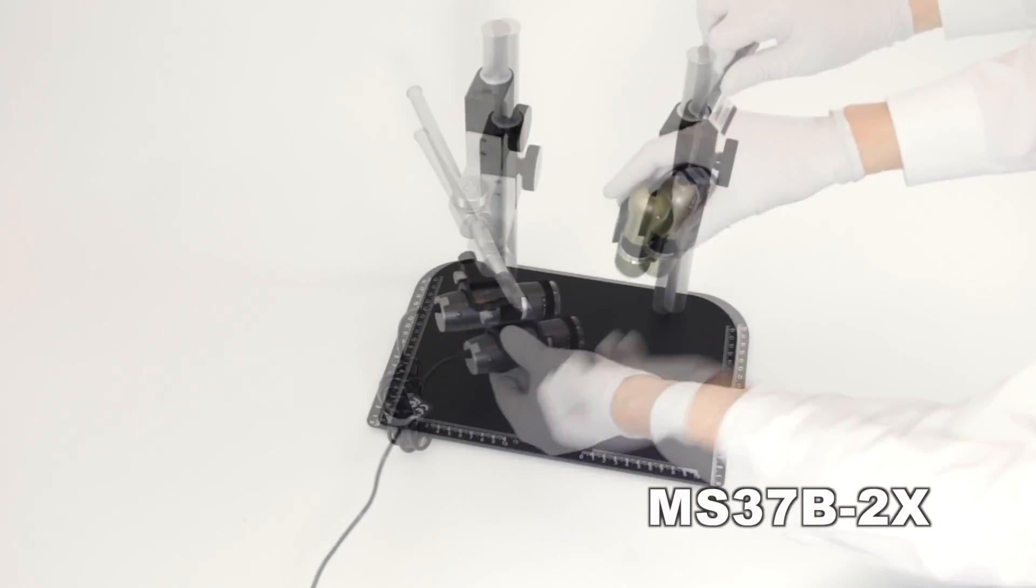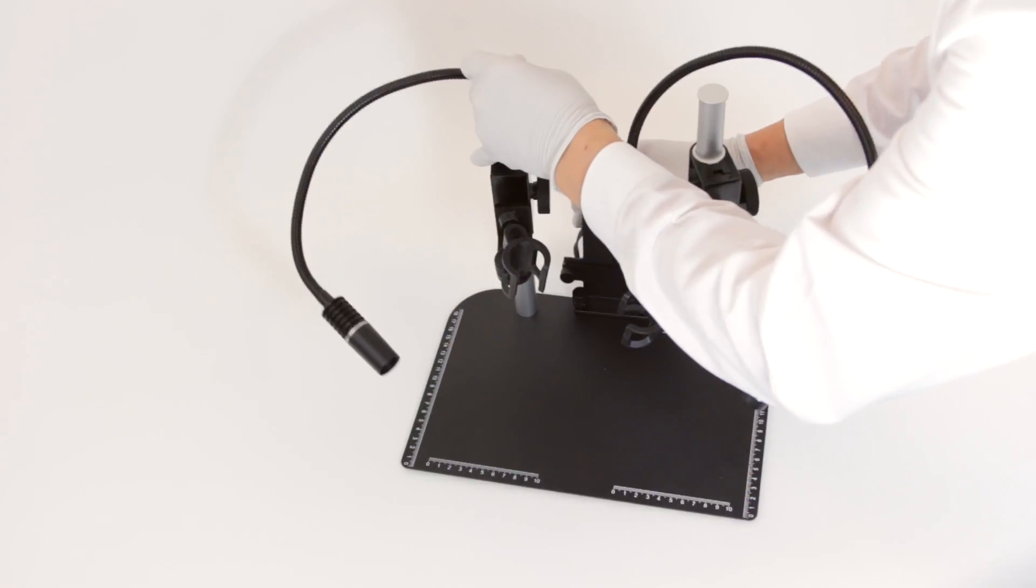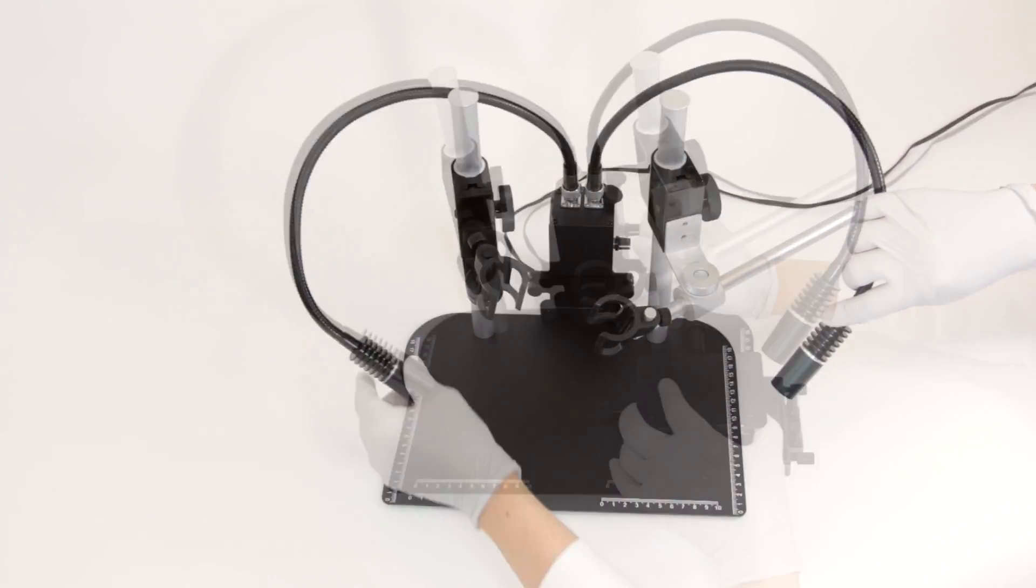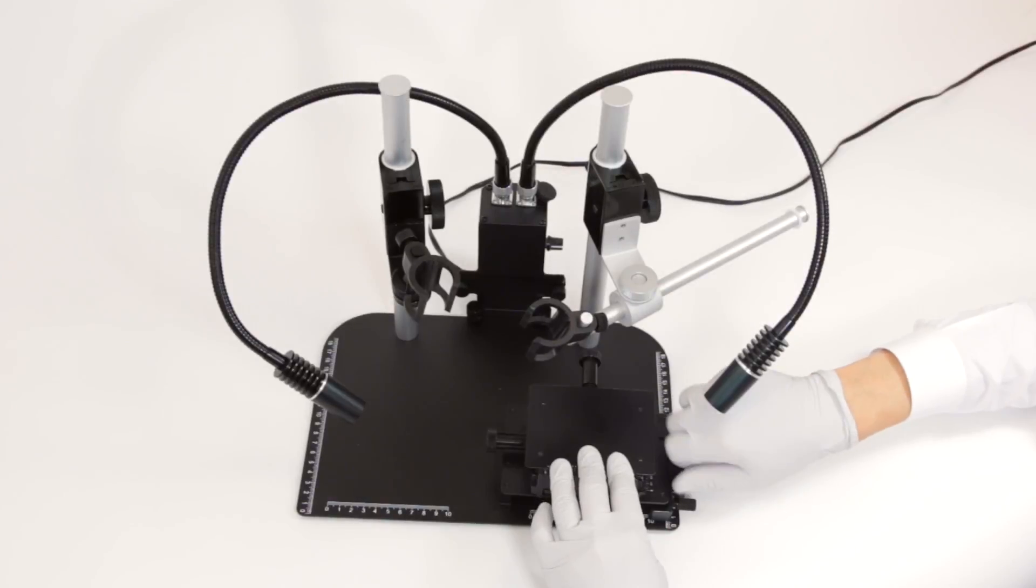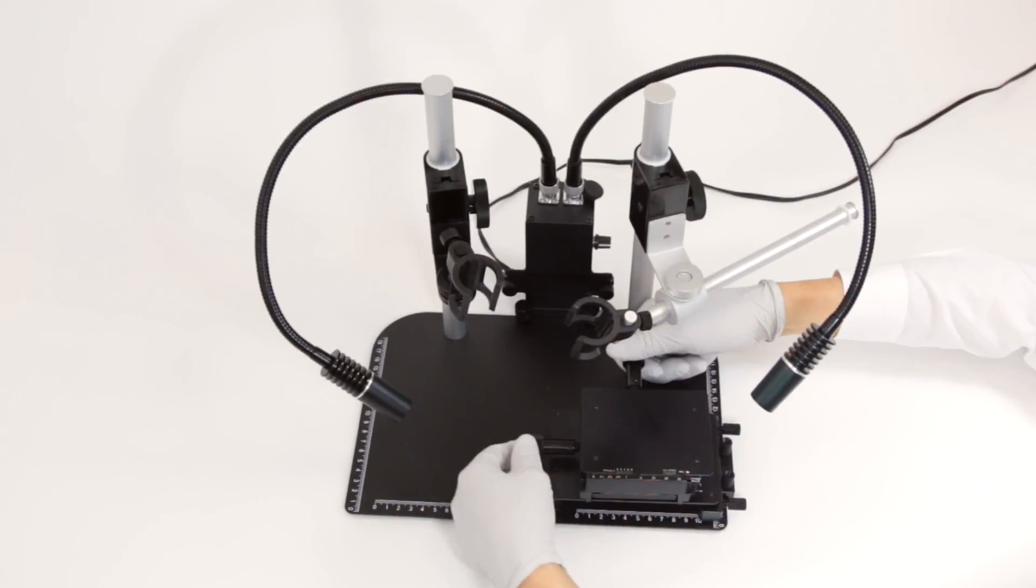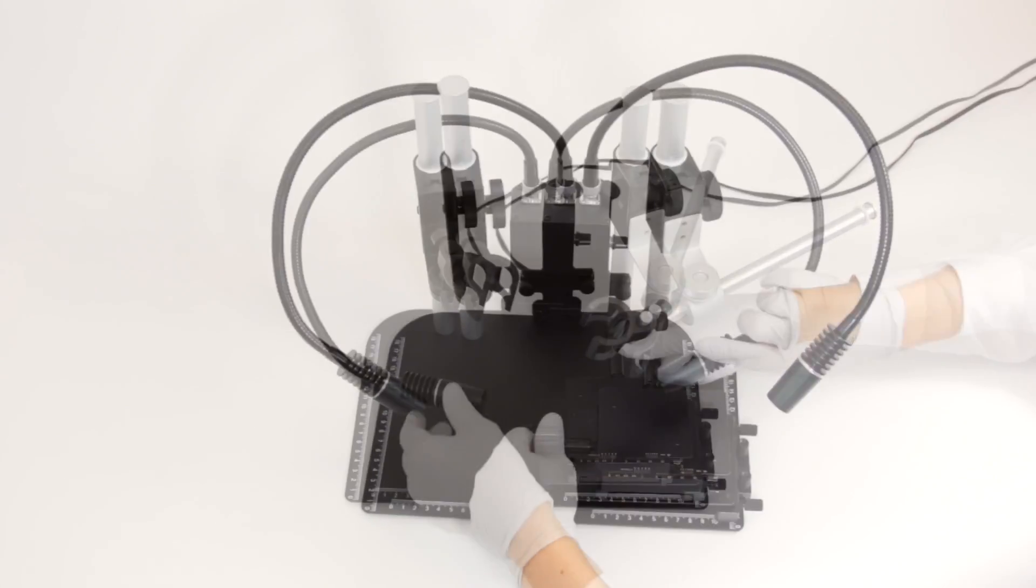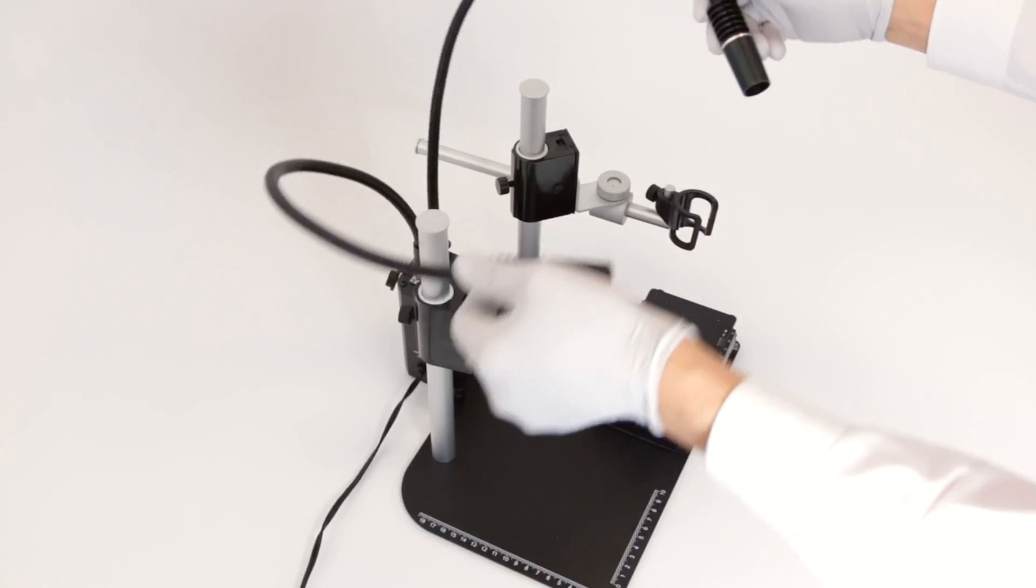The MS37B2X includes one standard block and one boom arm block for a mix of both options. This base is compatible with other accessories including the MSAK813 dual spotlight and the MS15X XY bases.